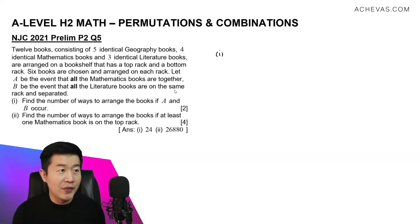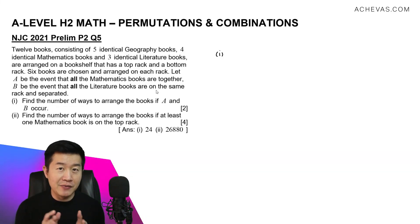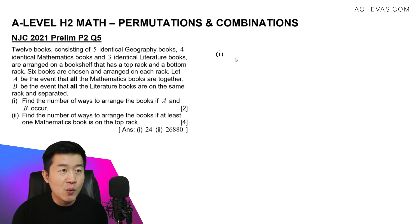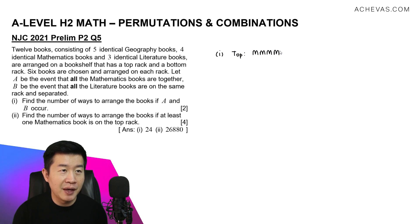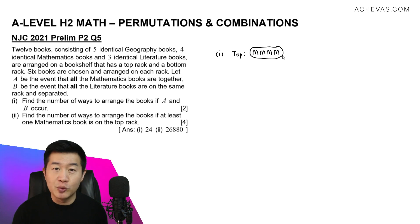One of the possible cases for events A and B to be happening at the same time is when all the math books are on the top rack — math, math, math, and math. Because they must be together, I'm going to group them together as one object.